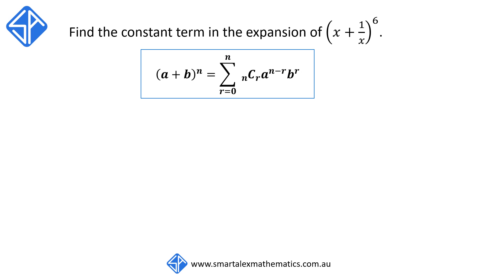So using this identity, we can rewrite x plus 1 over x to the 6 as being equal to the summation from r is equal to 0 to 6 of 6Cr x to the 6 minus r times 1 over x to the r.